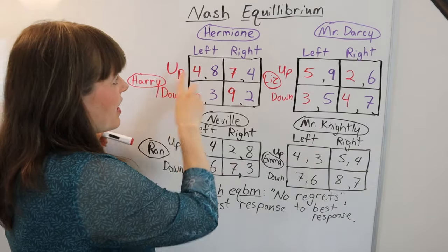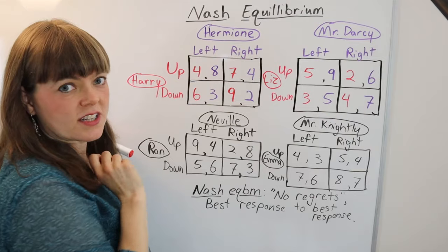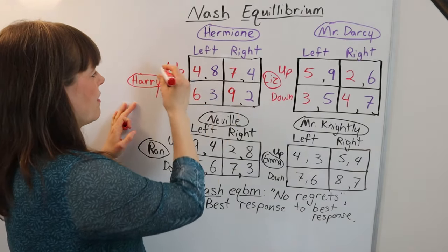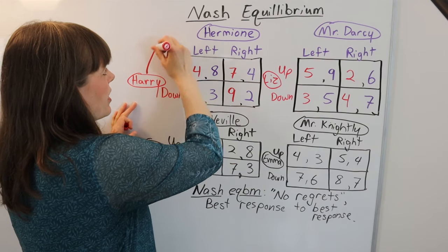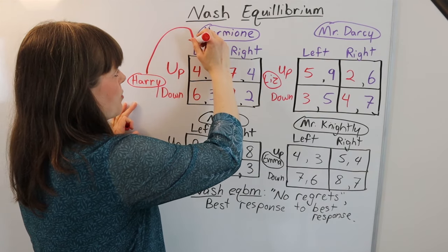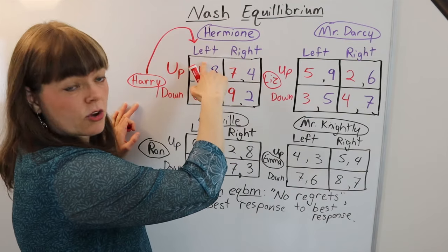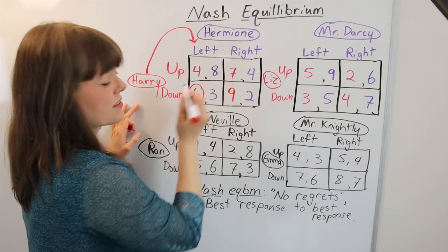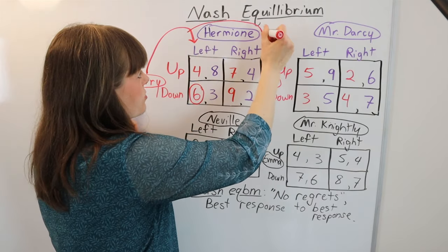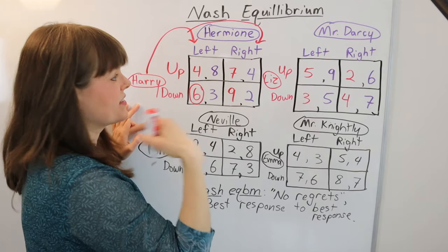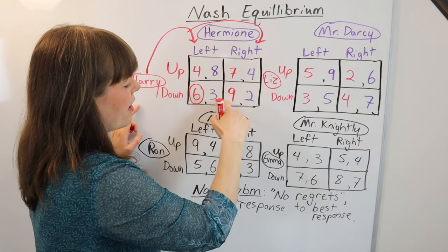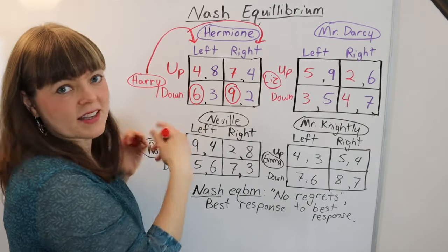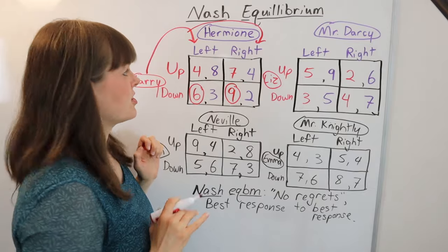Here's the trick: we check Hermione's strategies — that's the weird part. With Harry, we say I care about the red payoffs, but I'm going to go one by one over each of Hermione's strategies. If Hermione goes left, will I prefer the four or the six? I prefer the six as Harry. And if Hermione goes right, will I as Harry prefer the seven or the nine? I prefer the nine. So he actually has a dominant strategy, meaning his best response is always down, no matter what she does.